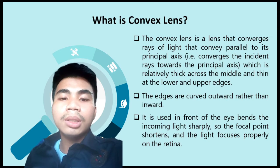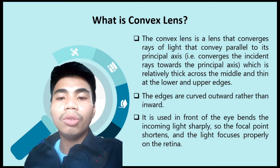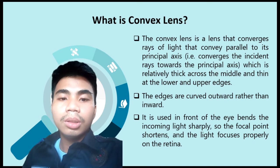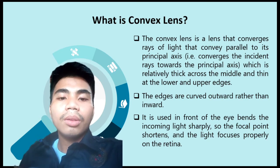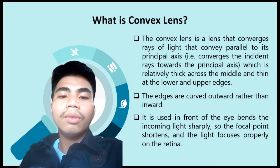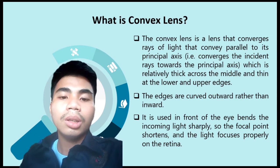Sa convex lens, bagga sya sa tungan, nipis sa edges. Ang lens mo-converge, iyang itapok ang light, ang light rays niya i-bend. Mo-form siya ang real and virtual images, dipende sa position sa object.